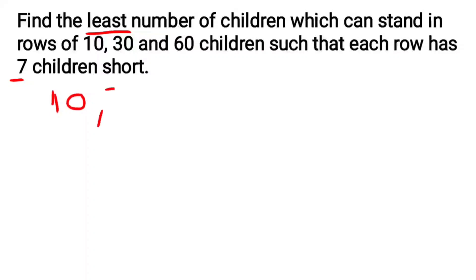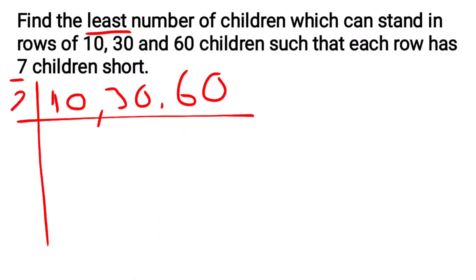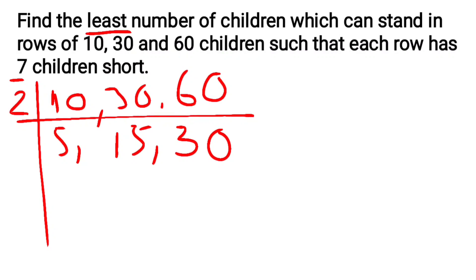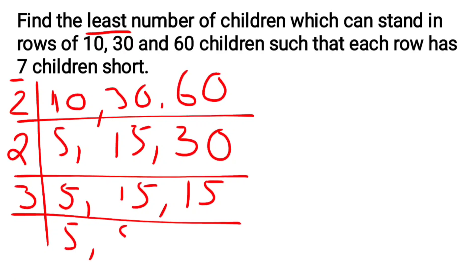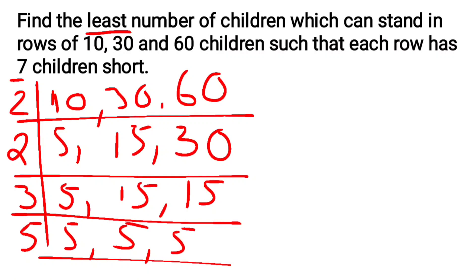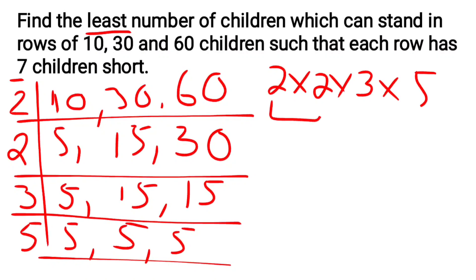Finding LCM of 10, 30, and 60: 10 divided by 2 is 5. 30 divided by 2 is 15. 60 divided by 2 is 30. Continue: 2 times table again, then 3 times table — 15 divided by 3 is 5, and finally 5 divided by 5 is 1. The factors are 2 × 2 × 3 × 5.